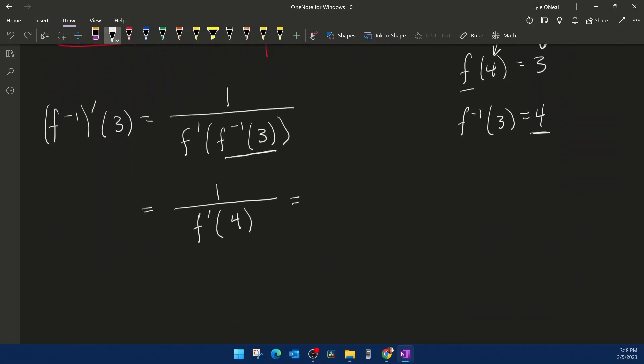And so there we can plug and play again, giving me 1 over 3 fourths. And then if I do a little KCF, a little keep change flip, we're going to get our answer to be 4 thirds.